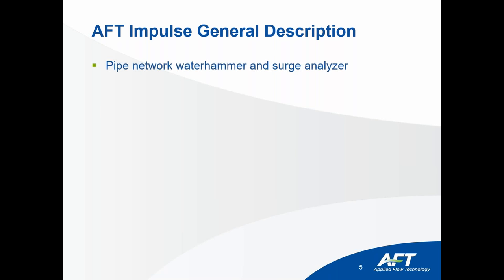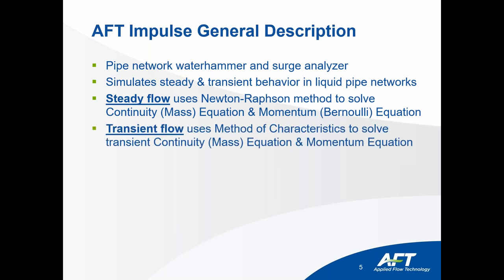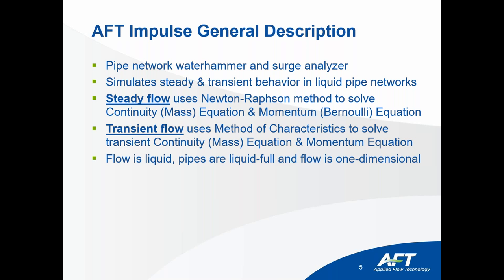AFT Impulse is an excellent pipe network surge analyzer. Impulse has a steady-state solver because initial conditions need to be established before the transient analysis can begin. It uses the same Newton-Raphson steady-state mass and momentum balance solver that Fathom does. For transients, the method of characteristics is used to solve the transient mass and momentum balances. Key assumptions: flow is liquid, all pipes are liquid-full, flow is one-dimensional, and wave speed is constant during the transient.